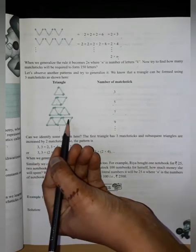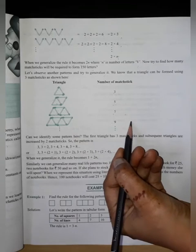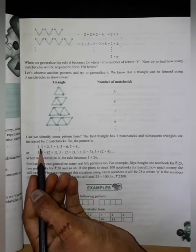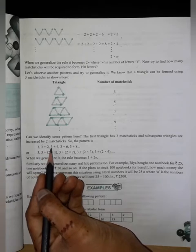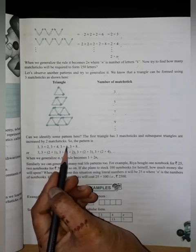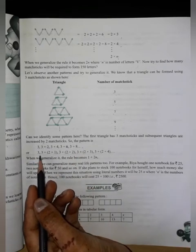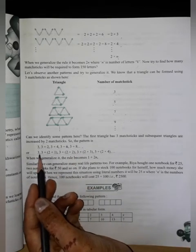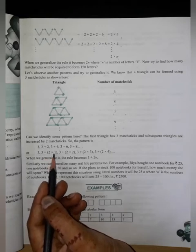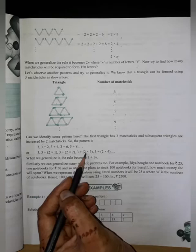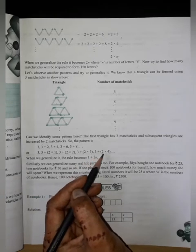In one triangle, we have three matchsticks. When we use two triangles, we have two matchsticks increased. We have three, three plus two. Then we have three triangles, again two matchsticks increased. And one, two, three, four, we have four triangles, then we have two matchsticks increased. We have three plus three, three plus two, three plus four, three plus six, three plus eight. We have three, three plus two into one, three plus two into two, three plus two into three, three plus two into four.